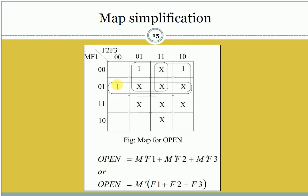For the last group of 4 values, F2 and F3 are changing, but M and F1 remain unchanged. M is 0 and F1 is 1, so we get M'F1 for this group. Therefore, Open = M'F1 + M'F2 + M'F3. If we factor out M', we get Open = M'(F1 + F2 + F3).